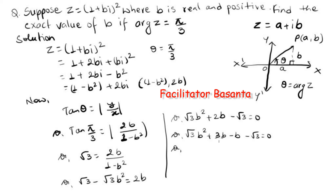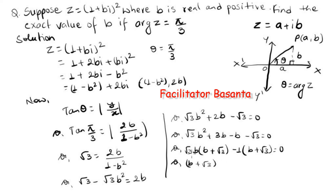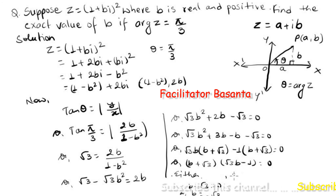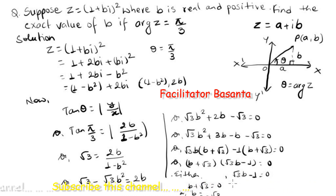We split 2b as 3b minus b so that we can factor by grouping: √3·b² plus 3b minus b minus √3 equals 0. In the first two terms √3·b is common, giving √3·b(b + √3). In the last two terms, minus 1 is common, giving minus 1(b + √3). So (b + √3)(√3·b minus 1) equals 0, giving either b equals minus √3 or √3·b minus 1 equals 0.